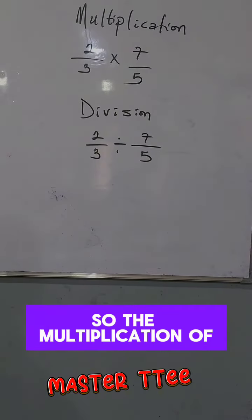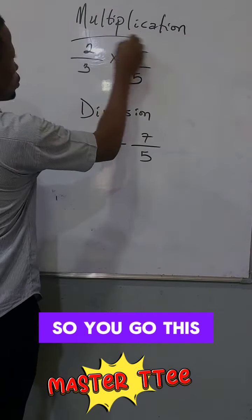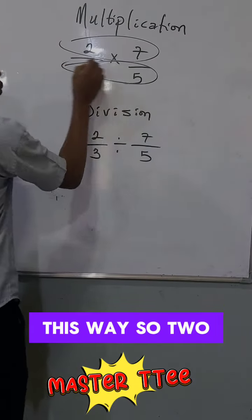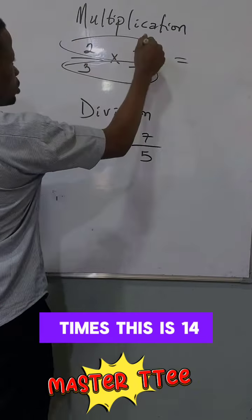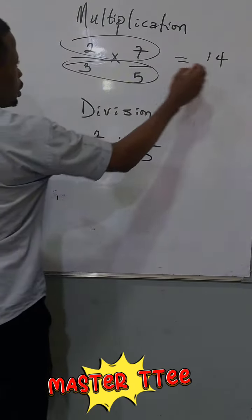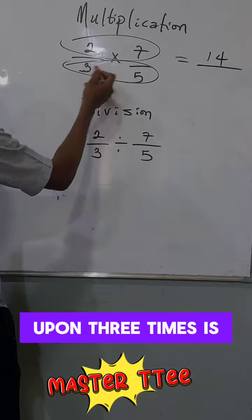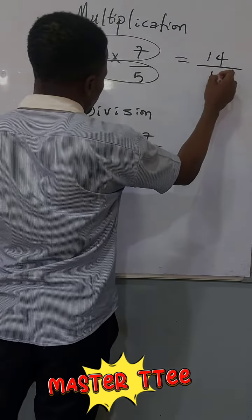So the multiplication of course is what you know. So you go this way, this way. So 2 times 7 is 14 upon 3 times 5 is 15.